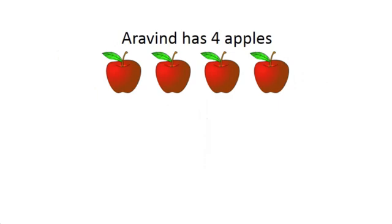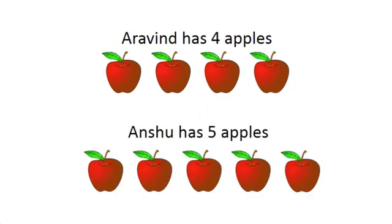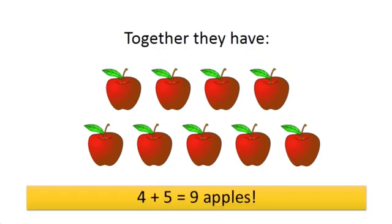Arvind has 4 apples. Anshu has 5 apples. When you add them together, they have 4 plus 5 — 9 apples.